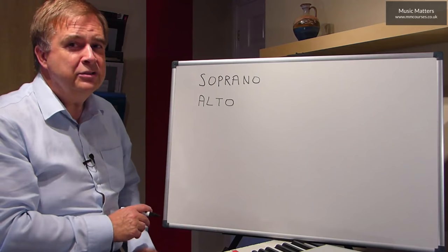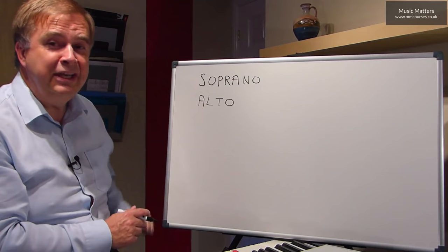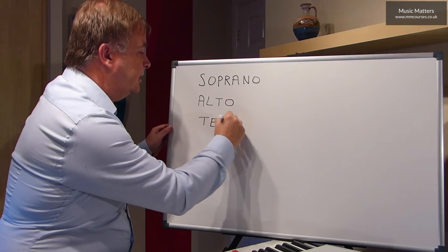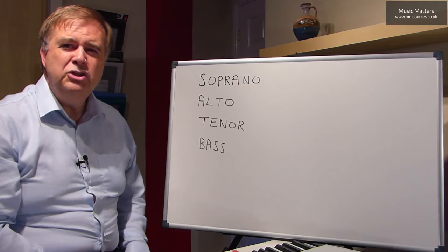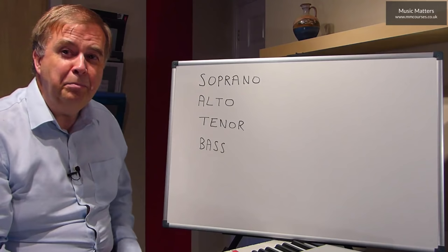Ladies singing the alto line are sometimes called contraltos. But you can have male altos as well. The highest voice is the soprano, the next voice down is the alto. Then we come to the two parts normally sung by the men. The next one down is the tenor, and then the voice at the bottom of the choir is the bass. So generally speaking, you've got four voices: sopranos, altos, tenors, and basses at the bottom.